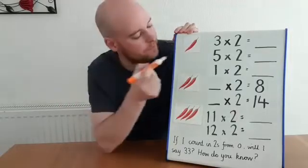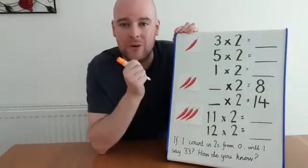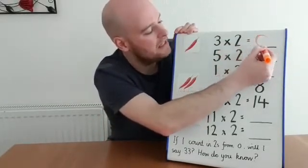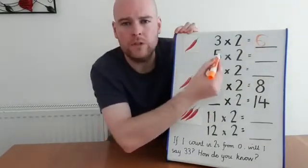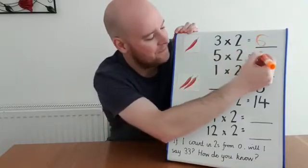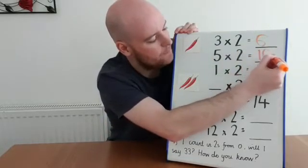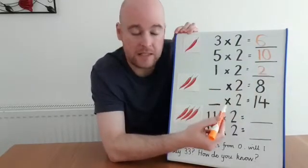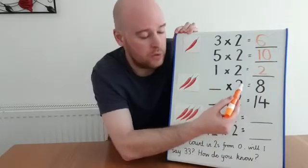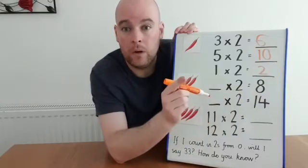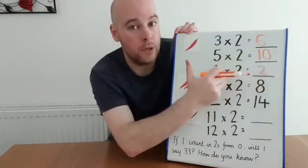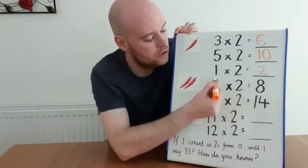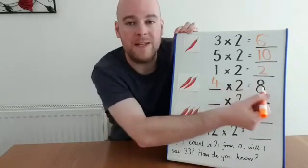Hi again. How did you get on? Shall we have a look at some answers together? Let's start with chili one. Three times two is six — I know double three is six, three lots of two is six as well. What's five times two? Ten. And finally for chili one, one times two is just two. Did any of you find out the missing numbers in these number sentences? What do I have to multiply by two to get to eight? Well, if I know multiplying by two is the same as doubling, then I know dividing by two — the inverse — is going to be the same as halving. I know half of eight is four. So four times two, double four, must be eight.